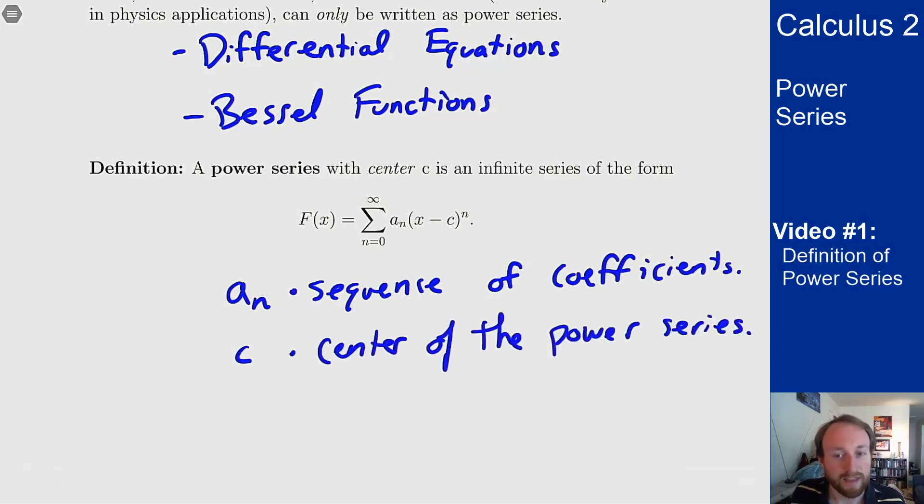Basically the way you want to think about these is they are infinite degree polynomials. They're polynomials where you just don't stop writing powers of n. If you have a fifth order polynomial you have a constant term degree 1, 2, 3, 4, and 5 and then you stop. For a power series you never stop. You just keep writing higher and higher powers of x and that gives you a power series.